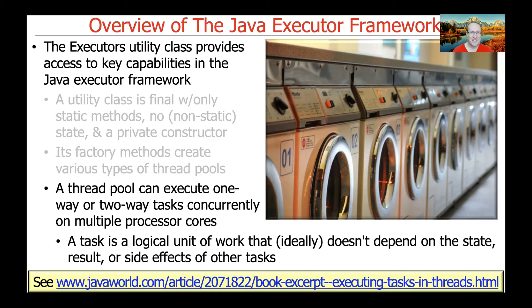The classic example of embarrassingly parallel tasks is going to the laundromat — or your laundry room if you live in a dorm — and doing your laundry by putting clothes into multiple washing machines at the same time.